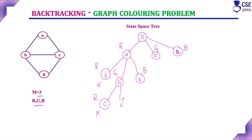For vertex C, can I give green? C is adjacent to B, and B is already assigned with green, so we cannot assign green to vertex C. The other color we have to choose for C — we can assign blue color to C. Since these are all dead ends, we need to backtrack to the previous step and check the other possibilities. That is the actual logic of backtracking.